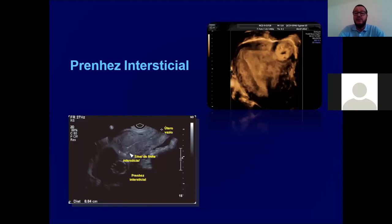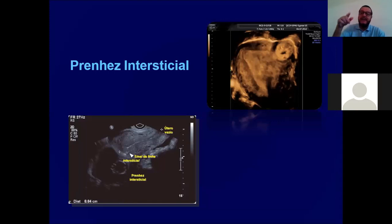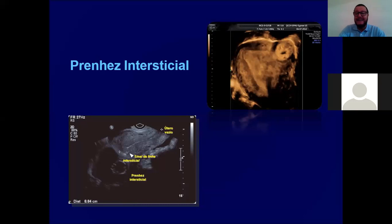Uma prenhez intersticial é uma gravidez na trompa muito perto da cavidade uterina. É uma gravidez extremamente preocupante porque os procedimentos cirúrgicos são complicados: no momento em que você vai ressecar esse local, uma parte do útero também tem que ser retirada, é um processo que sangra muito e requer habilidade cirúrgica específica para lidar com esse tipo de cirurgia.